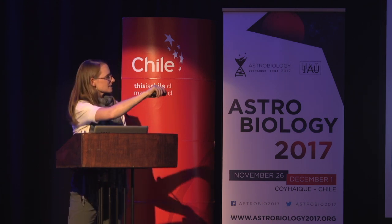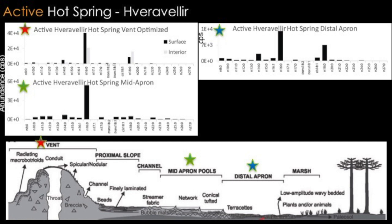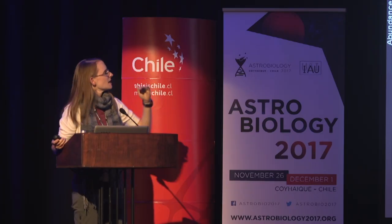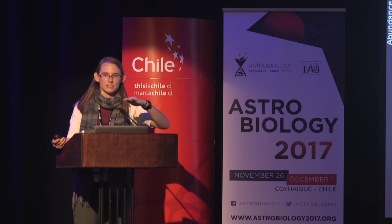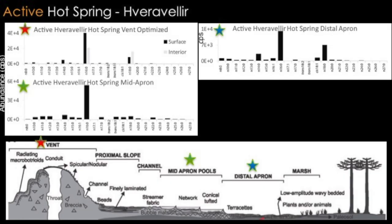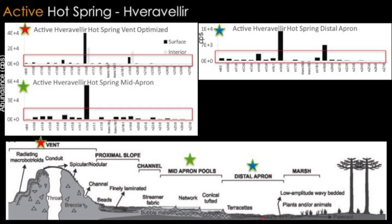What I want to do is use this schematic system to describe these three different sites. What you're looking at here are FAME profiles — fatty acid methyl ester profiles — of three different areas in our active hot spring. The vent is the top diagram, the mid-apron is the lower one, and the one on the right is the distal apron. The black bars are surface samples and the gray bars are subsurface samples. Let's zoom in so you can see these data better.